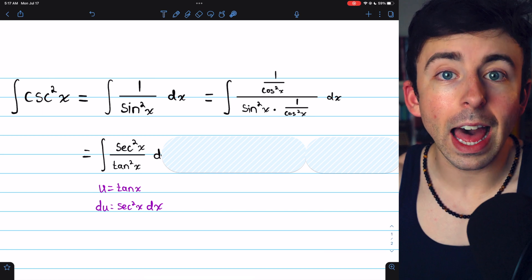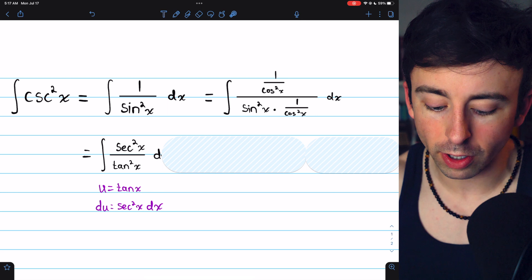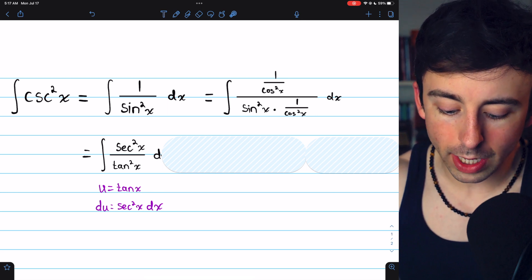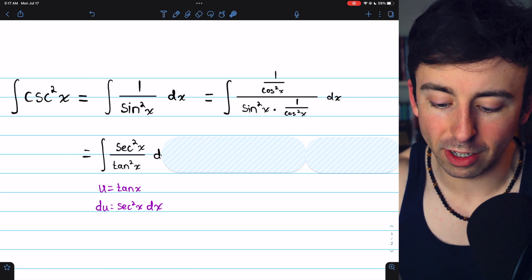And when we take the derivative of both sides of this u equation, we find that du equals secant squared x dx, which would take care of the rest of the integral.